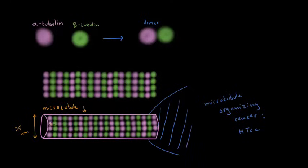At the other end, it's actually really interesting — dimers can be added very, very quickly to this end of the microtubule, making it longer. Or dimers could be taken off that end of the microtubule, making it shorter. So it can become longer and shorter very, very quickly. Microtubules are dynamic — they change, and they can change very quickly.